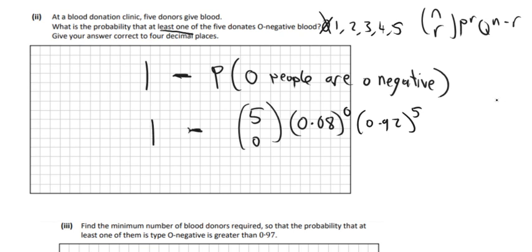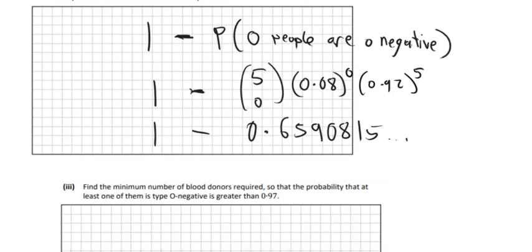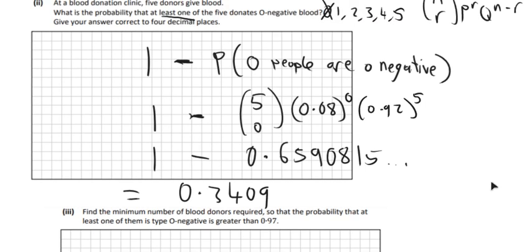So we do 1 take away all of that. You can just work this out first and then take it away from 1. So if you work that out separately, you'll get 0.6590815. And we're rounding that off again. Then if you just take that away from 1, you should get 0.3409. They wanted it to 4 decimal places. So that's it.